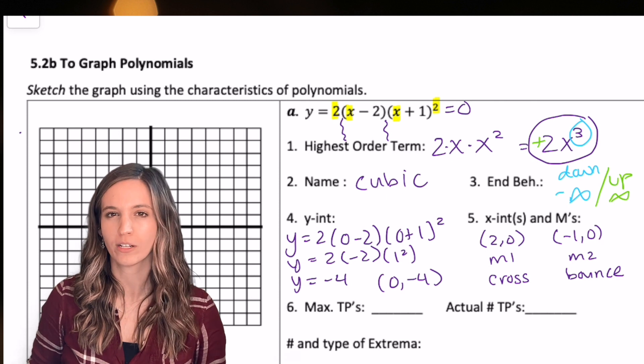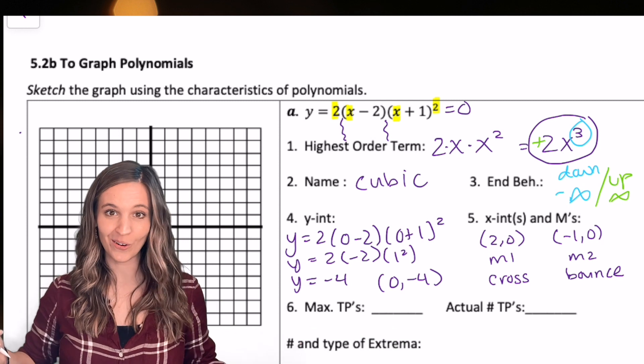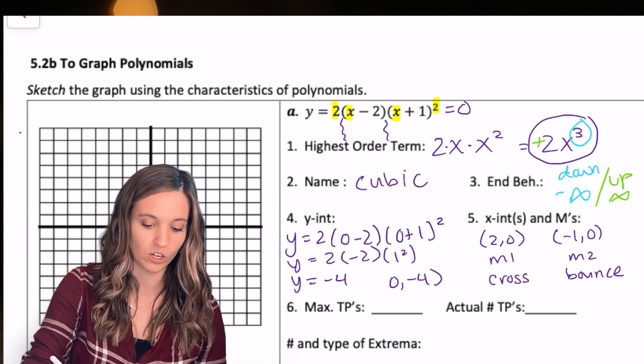Max number of turning points. Do you remember how to do that? One less than the degree. So my degree is three, so my max number of turning points could be two.